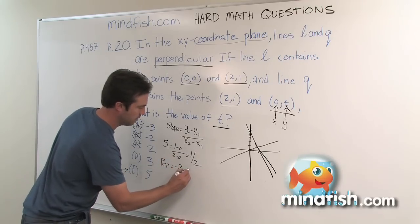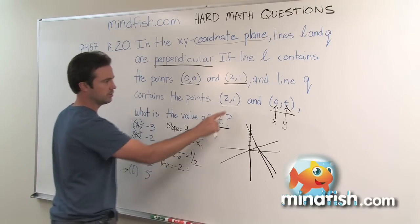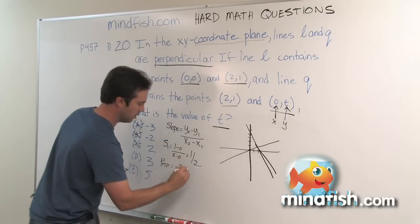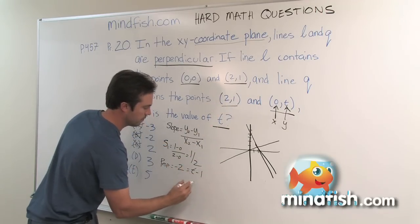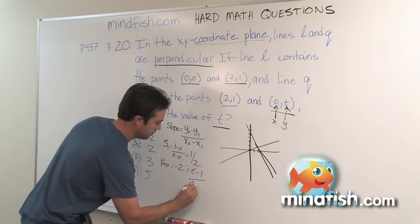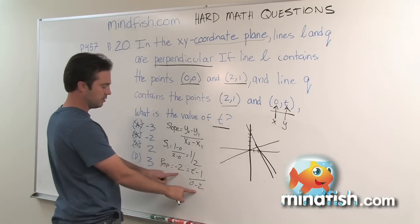Now this has to be equal to the change in y over change in x for these two points. So change in y is going to be t minus one and change in x is going to be zero minus two. And now I just need to solve this equation.